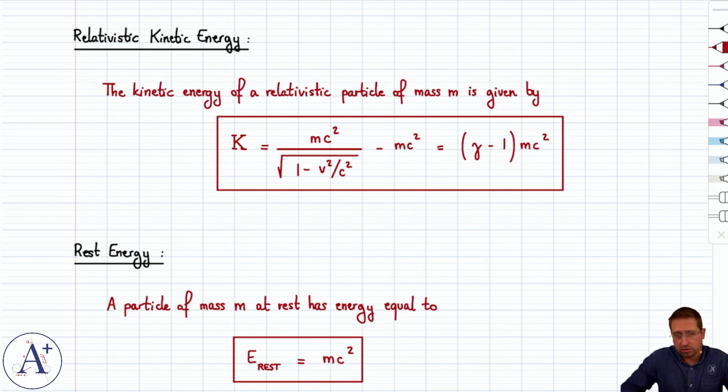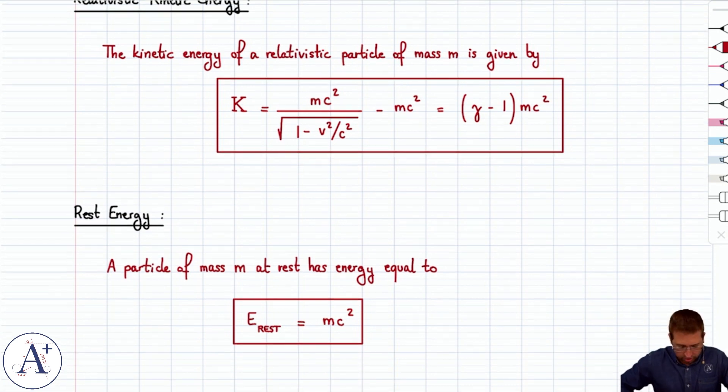And so as long as it's at rest, that's the energy that it has. Kinetic energy is the energy due to motion in excess of that. And so if we take k equals gamma minus 1 mc squared and we add back the rest energy mc squared, we actually get the total energy of the particle.